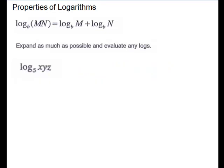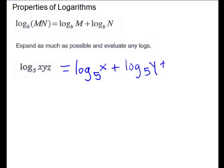For this next problem, log base 5 of xyz, we have a product of three pieces, so we are going to need three separate terms when we break it apart. We will have log base 5 of x plus log base 5 of y plus log base 5 of z. There is nothing else you could do to simplify any of those.